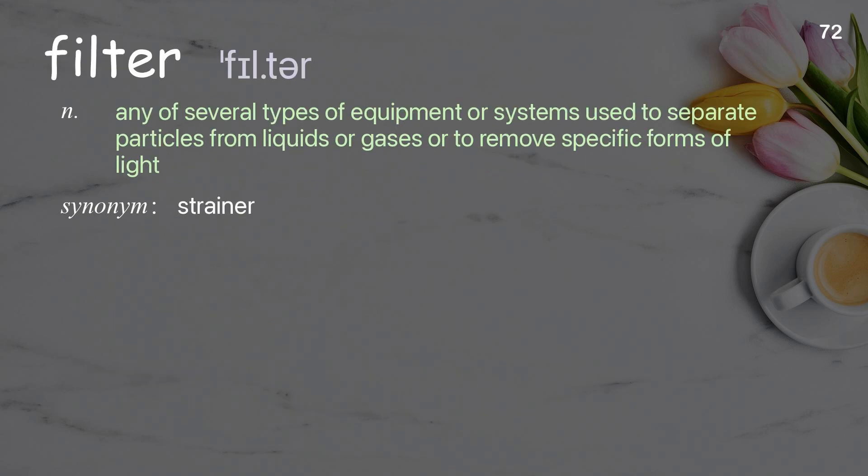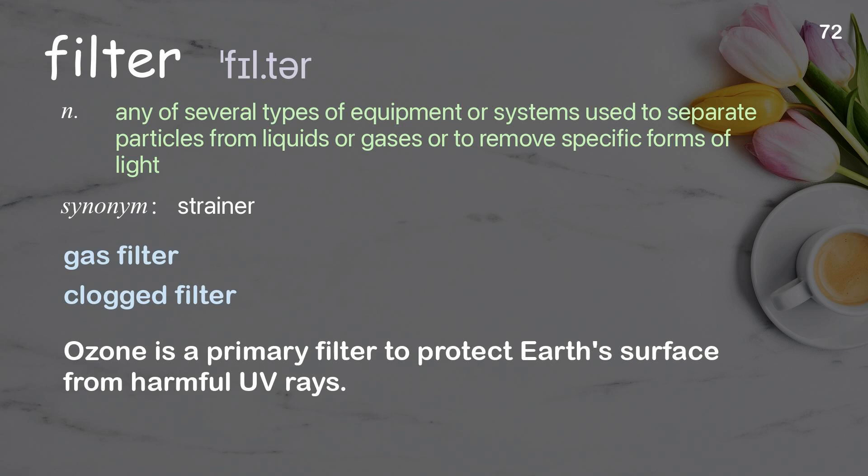Filter: any of several types of equipment or systems used to separate particles from liquids or gases or to remove specific forms of light. Examples: Gas filter. Clogged filter. Ozone is a primary filter to protect Earth's surface from harmful UV rays.